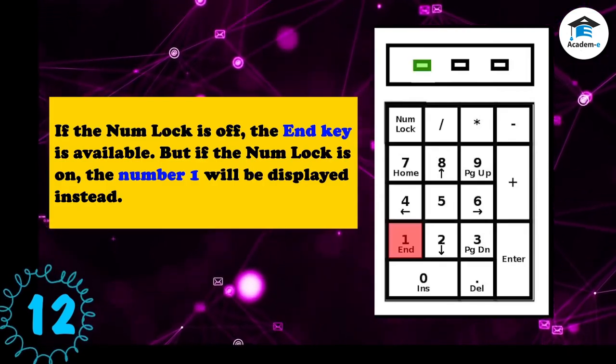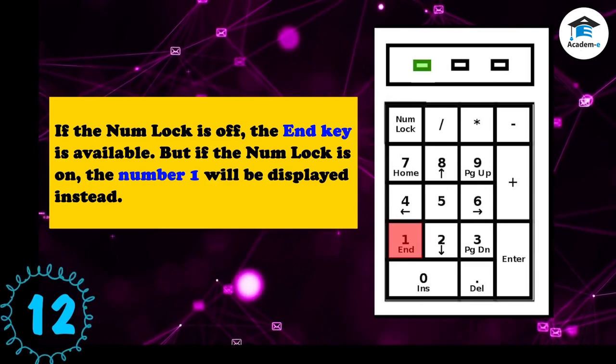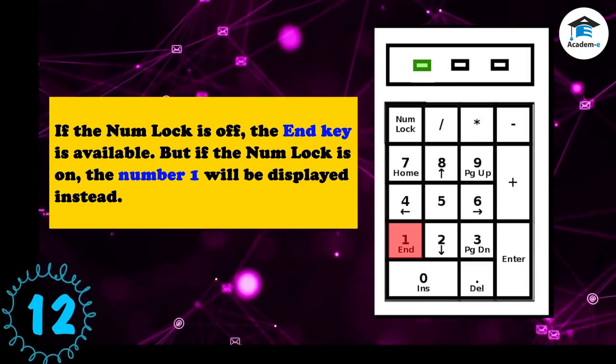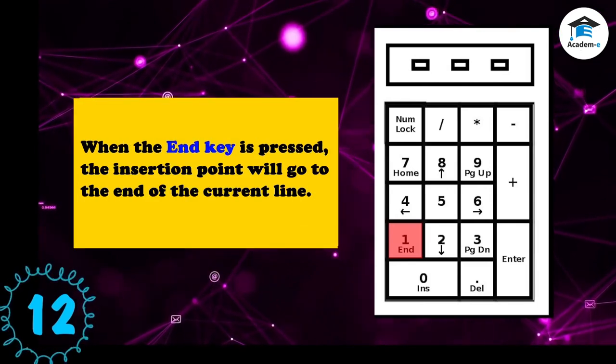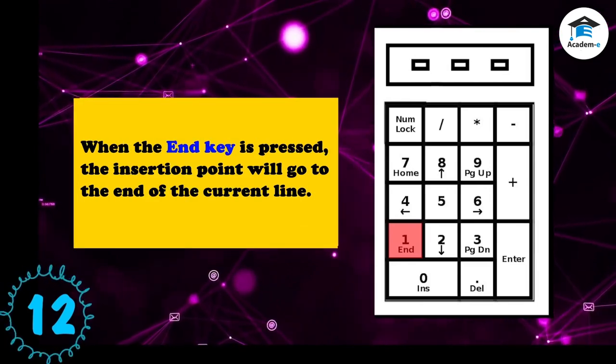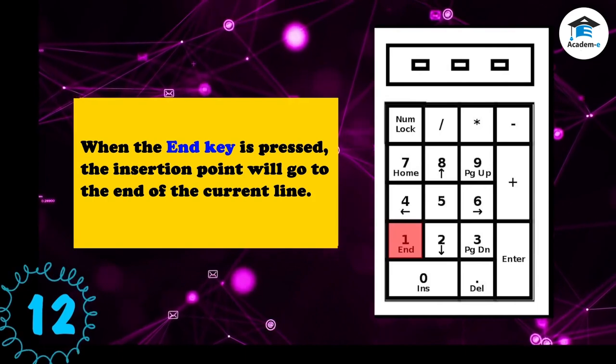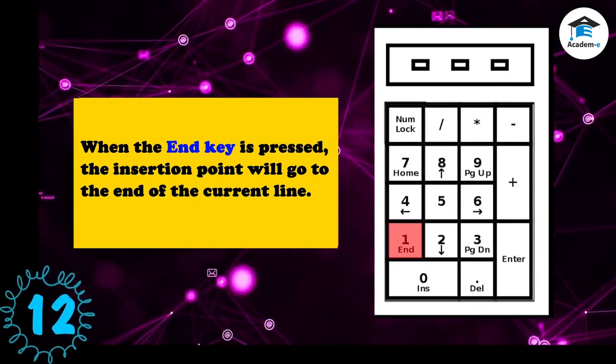If the Num Lock is off, the End key is available, but if the Num Lock is on, the number one will be displayed instead. When the End key is pressed, the insertion point will go to the end of the current line.